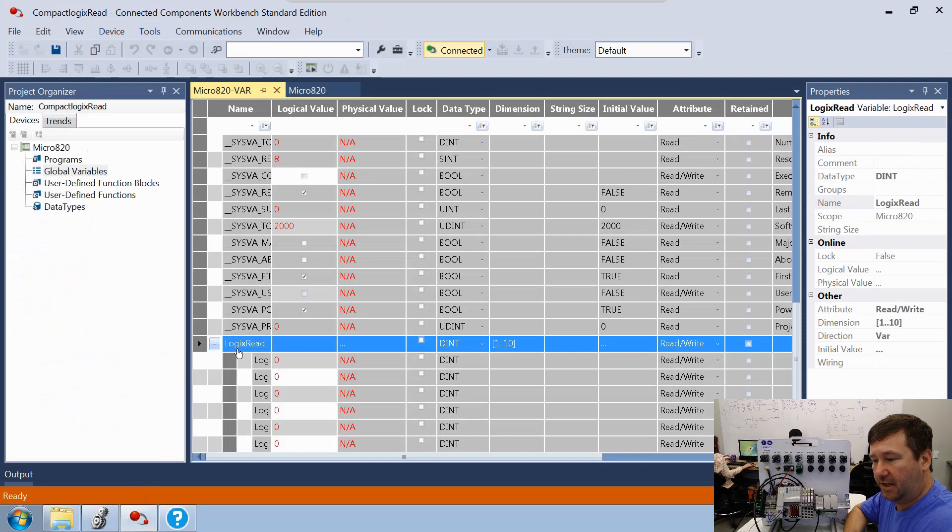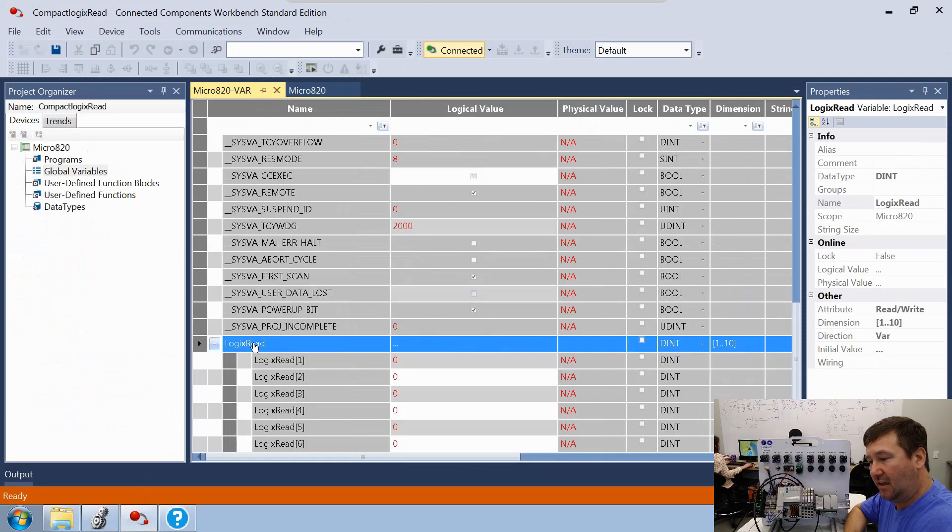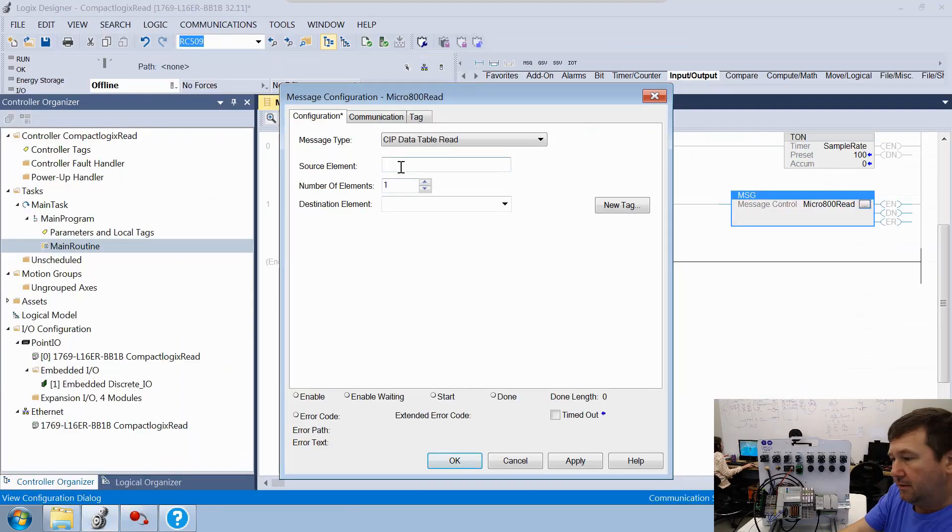Once you select it, then you're going to need to know that source element from connected components workbench, which we can pop back over if we're not sure. And it's going to be logics read. So we'll put in logics read.